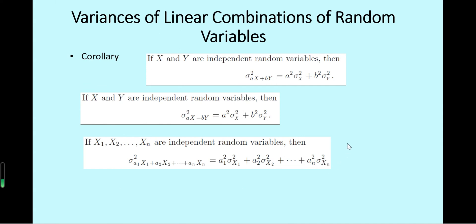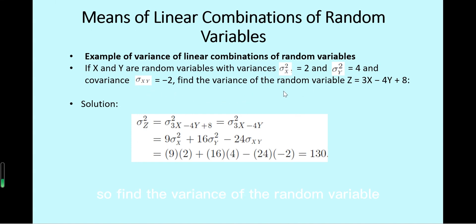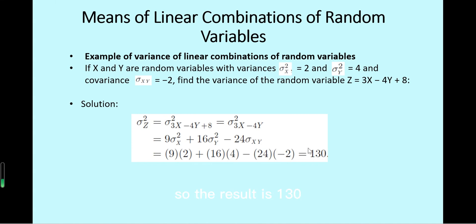For example, given random variables x and y with Var(x) = 2, Var(y) = 4, and Cov(x, y) = -2, find Var(z) where z = 3x minus 4y plus 8. The variance of z equals the variance of 3x minus 4y, since the constant is omitted, giving 9·Var(x) + 16·Var(y) minus 24·Cov(x,y) = 18 + 64 + 48 = 130.